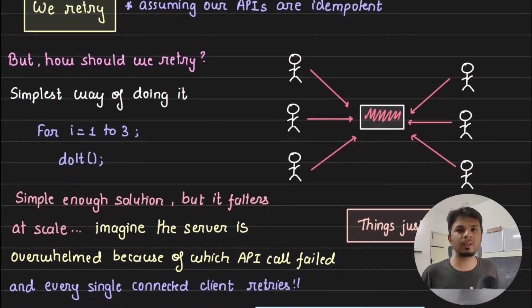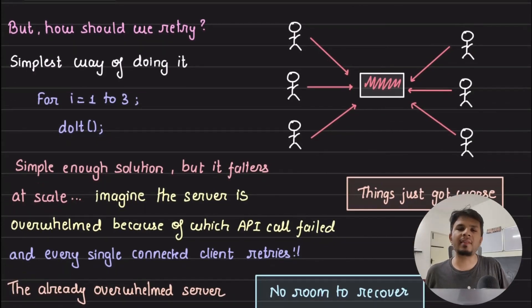How do we retry? A naive way to do it is, let's say we have a retry factor of three, which means that in case the API call fails we try three times before we say the API call failed. So we write a loop as simple as for i = 0 to 3, do it, where do it is the one which is making the API call. This approach works fine when you have fewer clients.